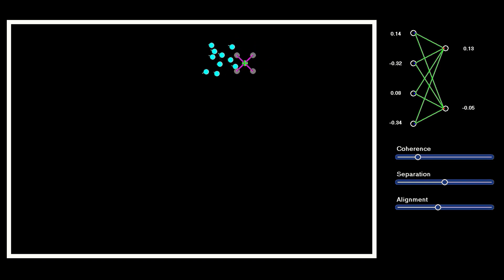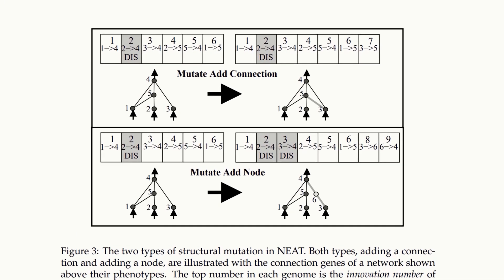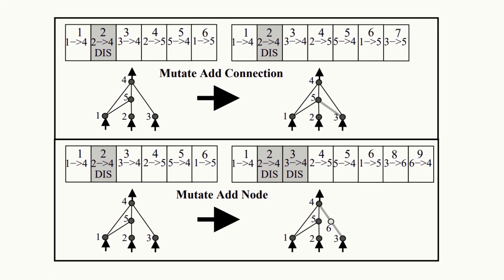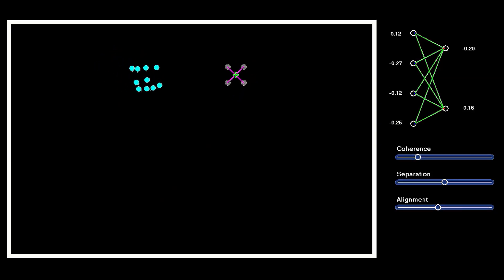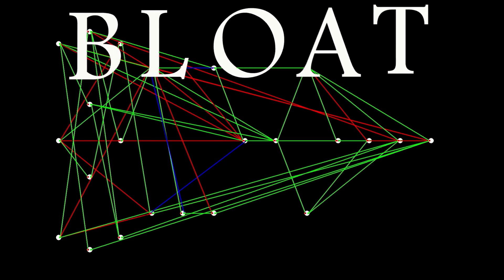The best approach is to start with no hidden nodes, and let them get added during the mutation stage. This is the power of the neat algorithm. If a new node in a network doesn't add any value, they tend to get removed from the population fairly quickly. And, as a result, you tend to get quite efficient solutions to problems in terms of their topology. This means that you can generally avoid the dreaded network bloat.